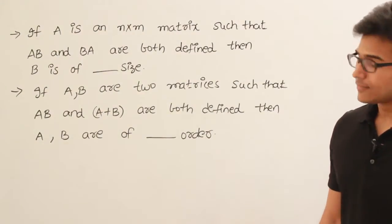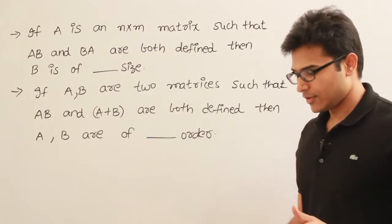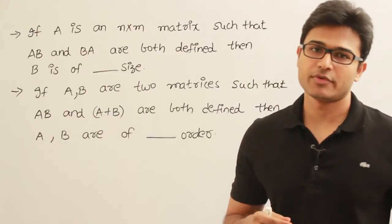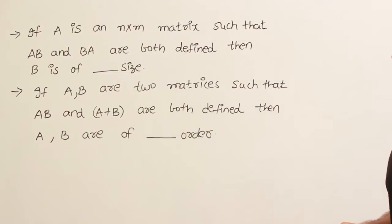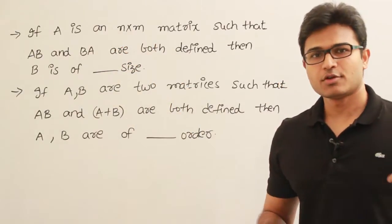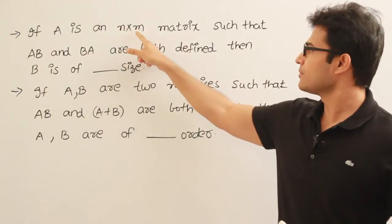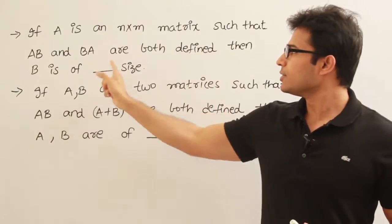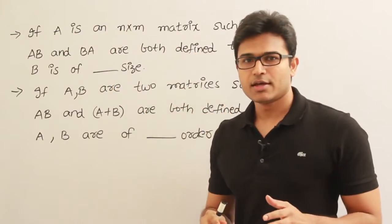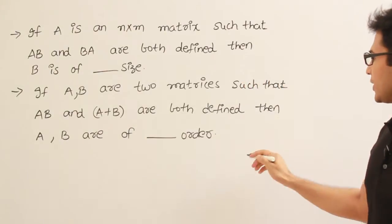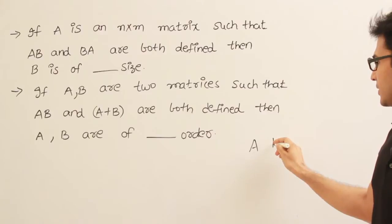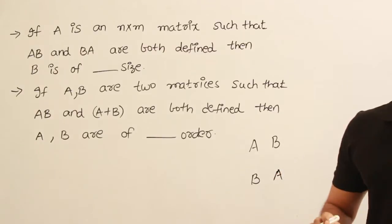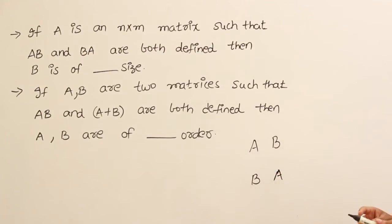Now let's see these two questions. They are about the sizes of matrices. In the first question, given the size of one matrix we are supposed to find the size of the other, and in the second question we are supposed to find the size of both matrices. If A is an n by m matrix, such that AB and BA are both defined, then both are conformable for multiplication, and we know the rule for conformability of matrix multiplication.